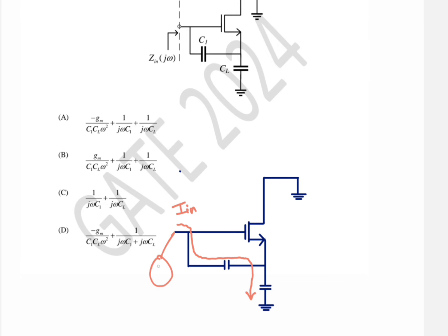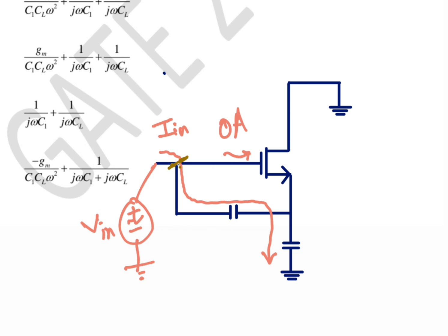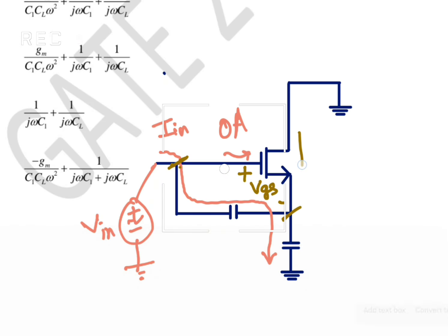There is already a voltage applied here. Since current flows, there will naturally be a voltage drop from one node to the other. The voltage drop across gate to source is vgs. From drain to source, there will be a current which is gm times vgs.